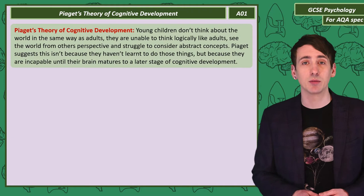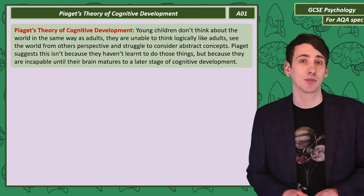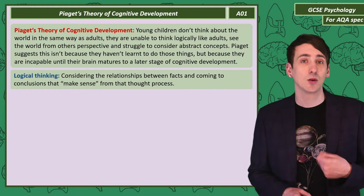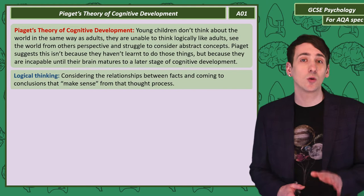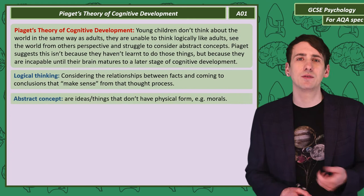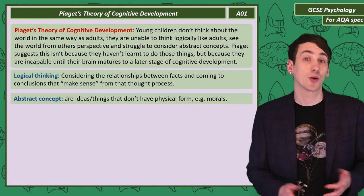Let me quickly define two words that will be important. Logical thinking is considering the relationship between facts and then coming to conclusions that make sense. So if I said I had three apples, two pears and three sweets, then how many pieces of fruit do I have? You can quickly understand that apples and pears are fruit but sweets are not, coming to the conclusion that I have five pieces of fruit. Abstract concepts are ideas that don't have any physical form — so morals, mathematics and beauty — as opposed to concrete concepts that you can point at, like apples.